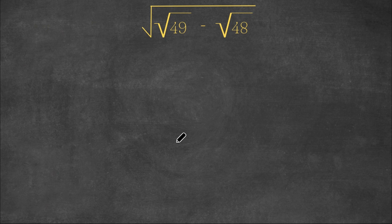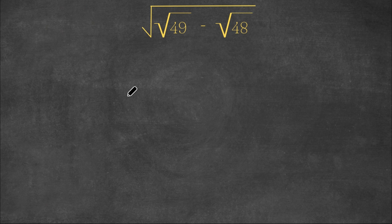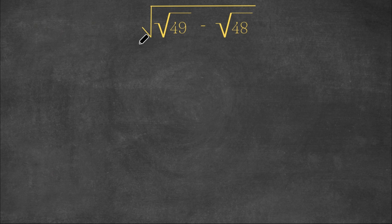Hey guys, welcome back to Qlik Academics. In today's video I'm going to teach you how to solve this radical problem. We have the square root of the square root of 49 minus the square root of 48.